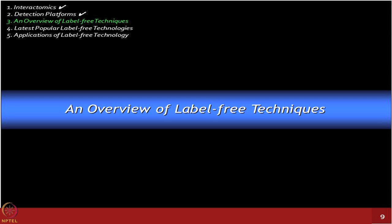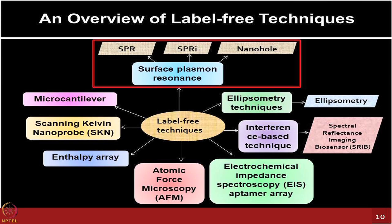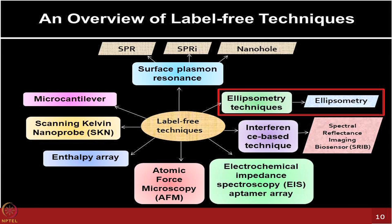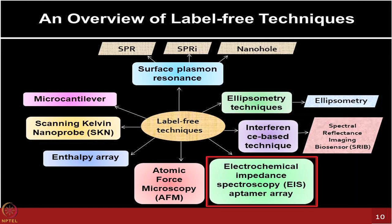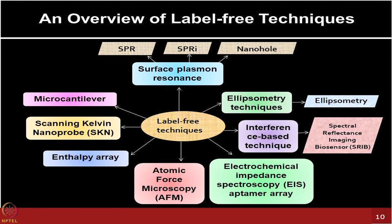We are covering two or three label-free technologies in this course, but there are many under development, with many physics researchers contributing by applying different physical principles to measure molecular interactions. SPR is just one among them, giving rise to multiple technology platforms including surface plasmon resonance, SPR imaging (SPRI), and nanohole arrays. There are also platforms based on ellipsometry, interference-based methods, electrochemical impedance spectroscopy, atomic force microscopy, enthalpy arrays, scanning Kelvin nanoprobes, and microcantilevers.